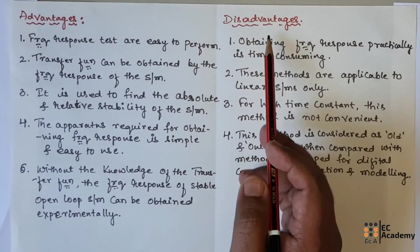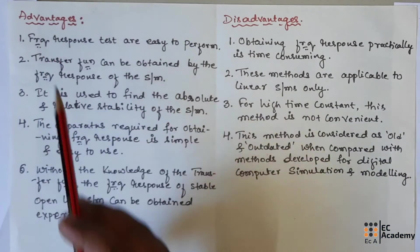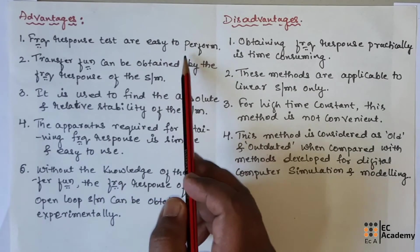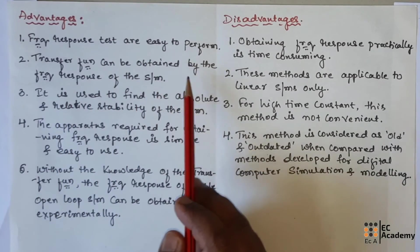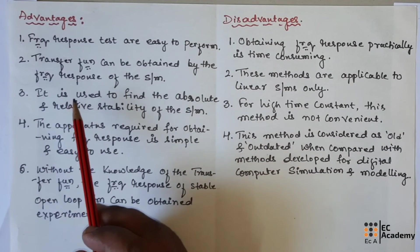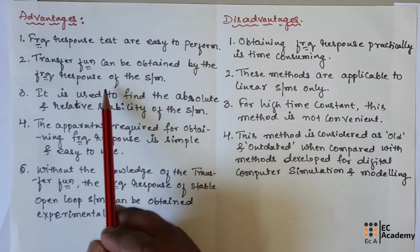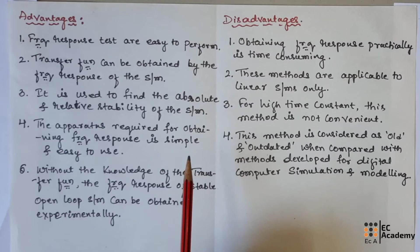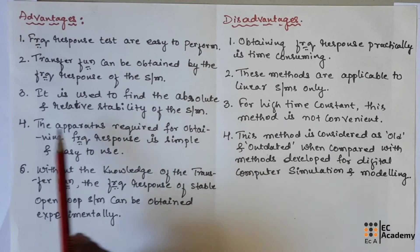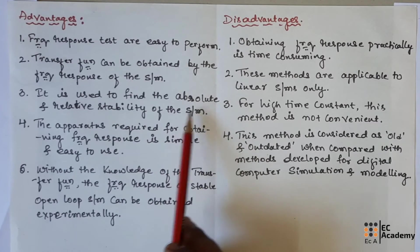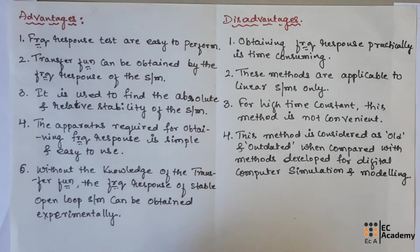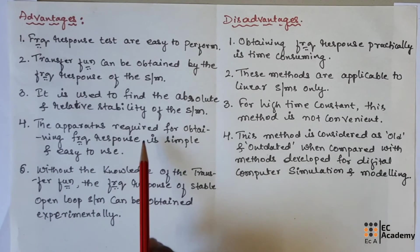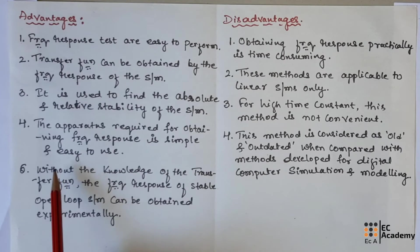Now let us understand the advantages and disadvantages of frequency domain analysis. First, the advantages: frequency response tests are easy to perform compared to other tests. The transfer function can be obtained from the frequency response of the system — we first find the frequency response, then derive the transfer function. Frequency domain analysis is used to find both absolute and relative stability of the system. The apparatus required for obtaining the frequency response is simple and easy to use.